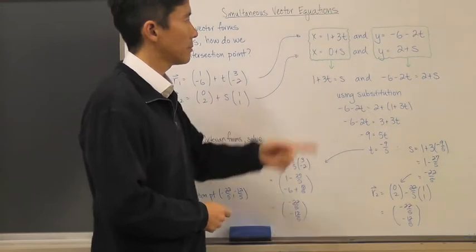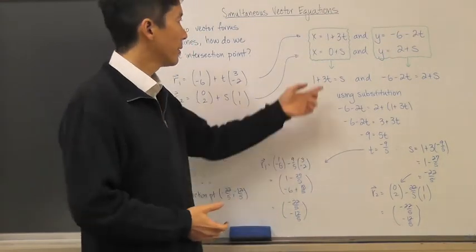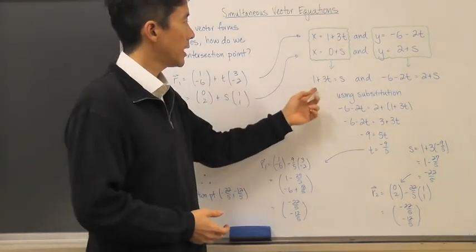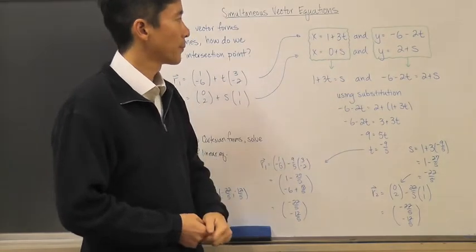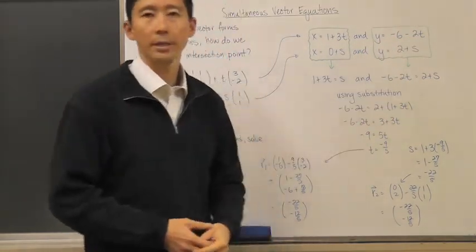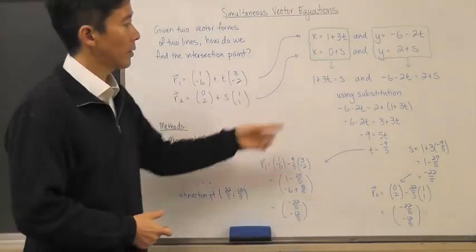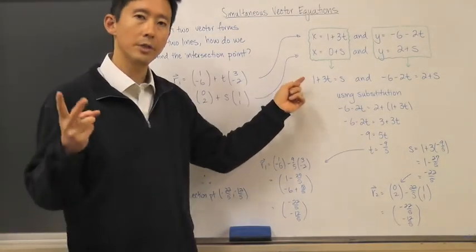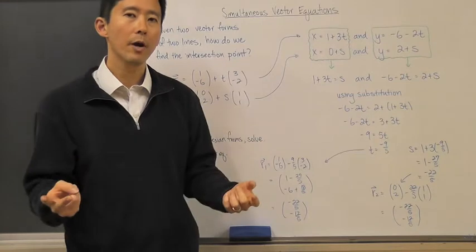So we're going to say that x has to equal x. We know that 1 + 3t has to be the same as s, and -6 - 2t has to equal 2 + s. Look at what we have—we now have two equations with two unknowns. We're trying to solve for the parameters.